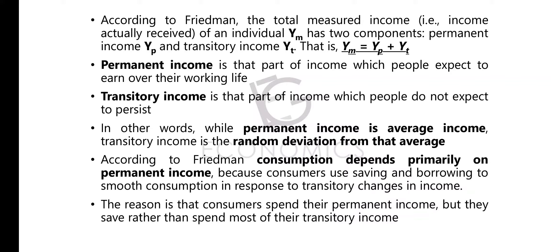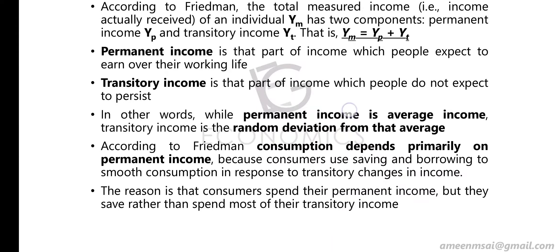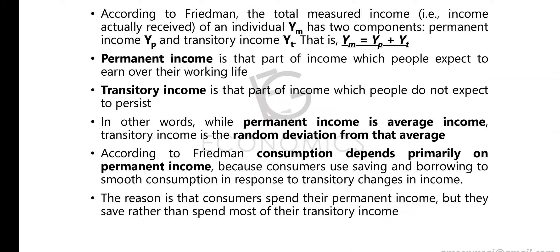Permanent income is that part of income which people expect to earn over their working life. Transitory income is that part of income which people do not expect to persist — it is temporary and unpredictable.